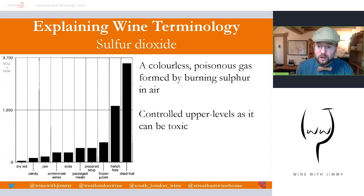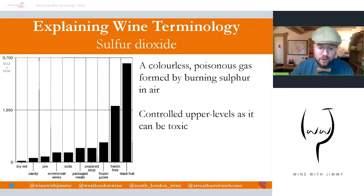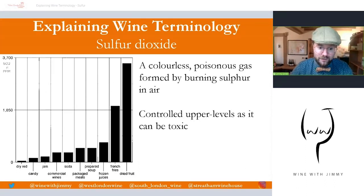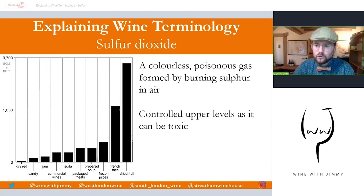The upper levels of sulfur dioxide in wine are strictly controlled as it can be toxic, hence all the labeling around it. But it's important to know that the amounts found in wine are actually considerably lower than in other foodstuffs. For example, a packet of dried apricots contains considerably more sulfur. French fries, frozen juices, prepared meals, packaged meats, and soda all have significantly more sulfur dioxide than red or commercial wines.